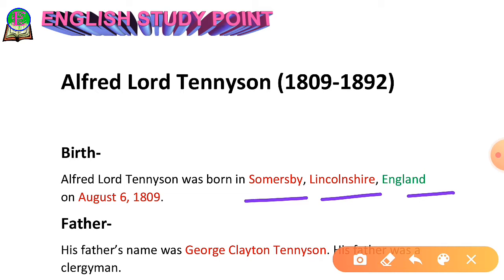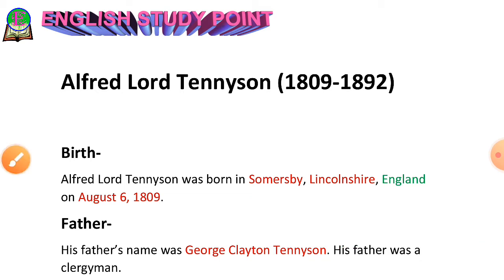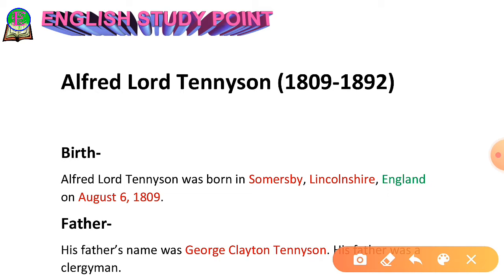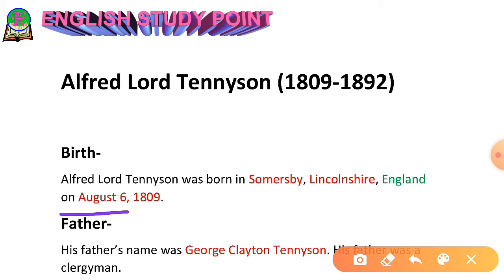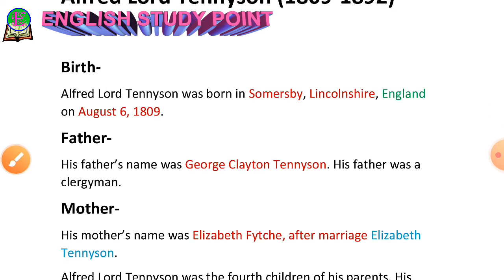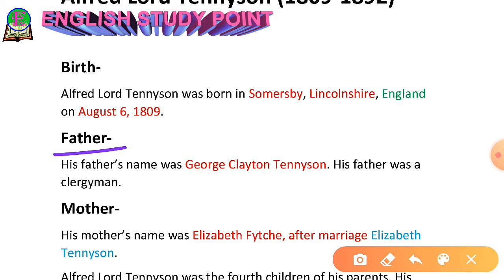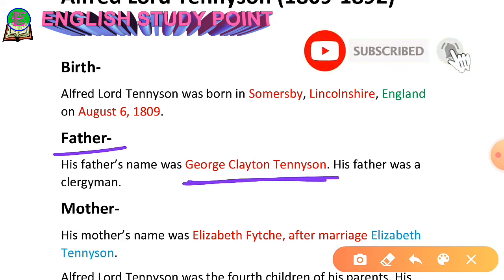I will cover the biography of Alfred Lord Tennyson with the help of some points displayed on screen. The first point is date of birth: August 6, 1809. The place of birth was Somersby, Lincolnshire, England. The next point is about his father — who was the father of Alfred Lord Tennyson? The answer is George Clayton Tennyson, who was a clergyman.